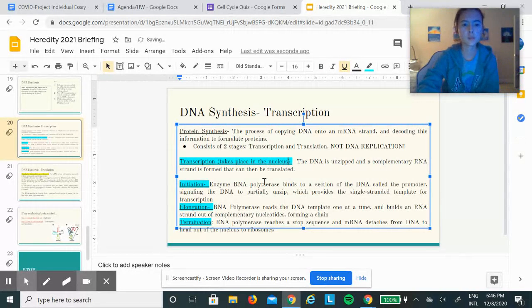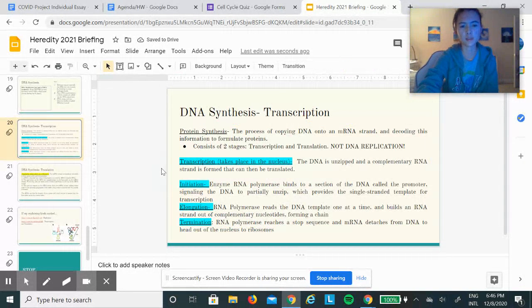This is where mRNA (messenger RNA) is involved. There are three steps to transcription: initiation, elongation, and termination. The enzyme helicase unwinds the DNA again, and RNA polymerase binds to a section of DNA called the promoter. The DNA unzips and mRNA starts being formed.